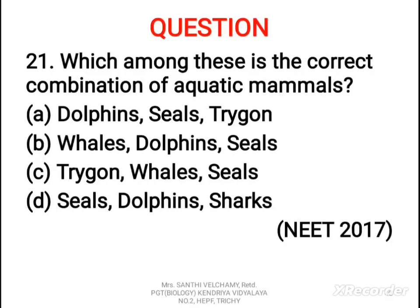Next question: which among these is the correct combination of aquatic mammals? A) Dolphins, Seals, Trigon, B) Whales, Dolphins, Seals, C) Trigon, Whales, Seals, D) Seals, Dolphins, Sharks. The correct answer is B — Whales, Dolphins, and Seals are examples of aquatic mammals. Trigon and Shark are cartilaginous fishes. Since the question asks for aquatic mammals only, B is the correct answer.